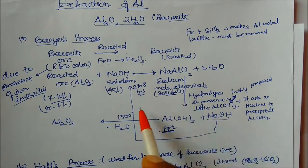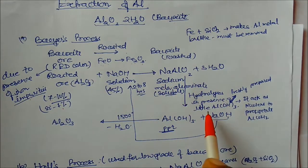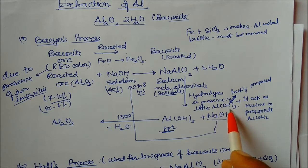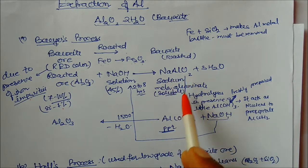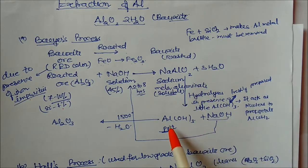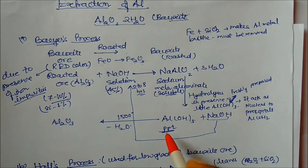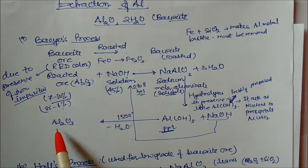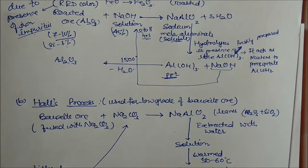After filtration, the sodium meta-aluminate solution undergoes hydrolysis in the presence of a little ammonium hydroxide, which helps make hydrolysis easier. We get aluminium hydroxide as a precipitate plus sodium hydroxide solution. The precipitate is filtered, dried, and heated to 1500 degrees centigrade to get aluminium oxide (alumina).